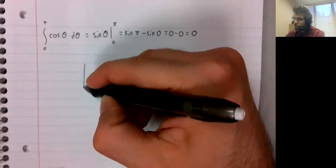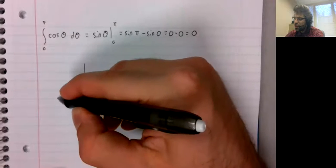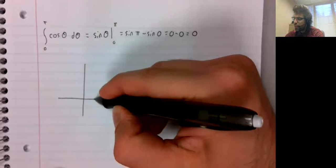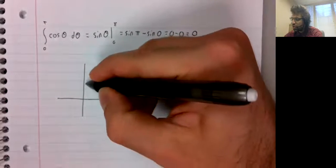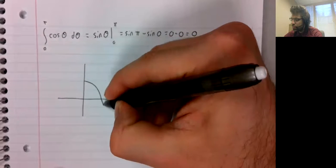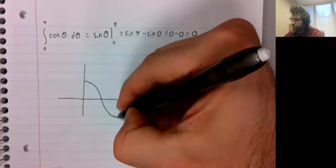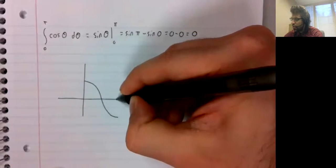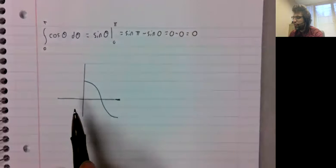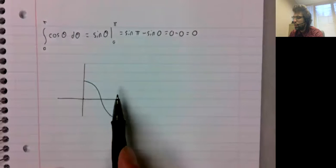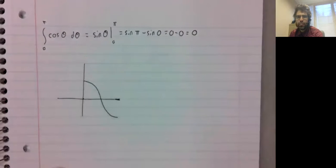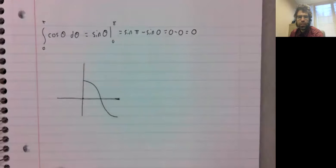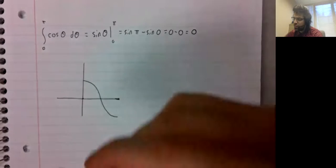What does that mean geometrically? On an interval from zero to pi, the cosine of theta looks like this.